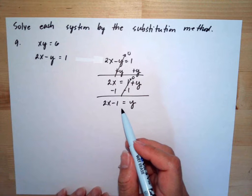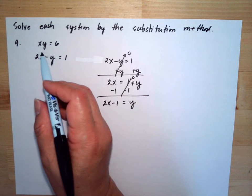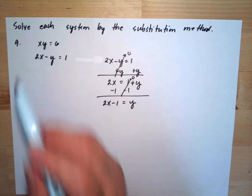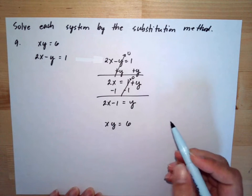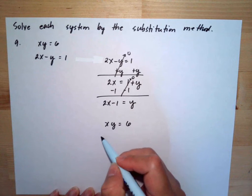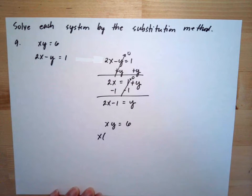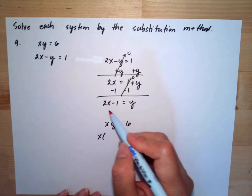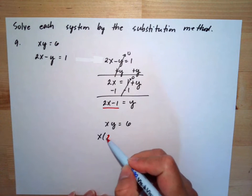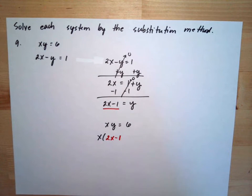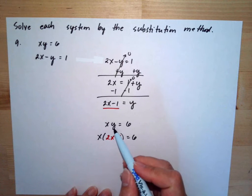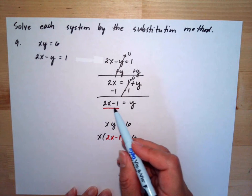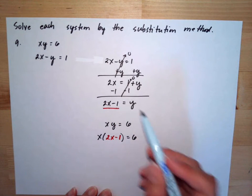Now I can use this equation to substitute for the value of y in the first equation. So we have x times y, the first equation, is equal to 6. So instead of y, it will be x multiplied by parentheses 2x minus 1, the equivalent value of y, which is equal to 6. I substituted 2x minus 1 because it's equivalent to y.